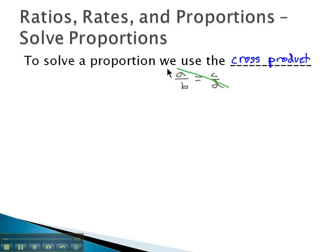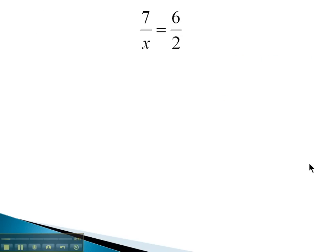we can multiply the diagonals, a times d and b times c, and those will be equal to each other. So let's see if we can use that cross product to help us solve problems with proportions.